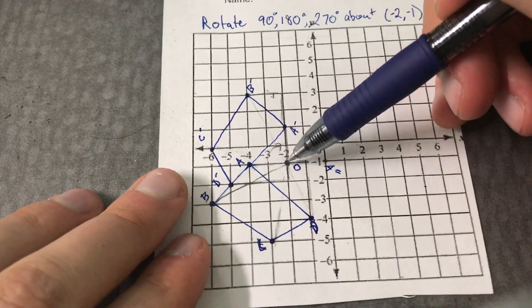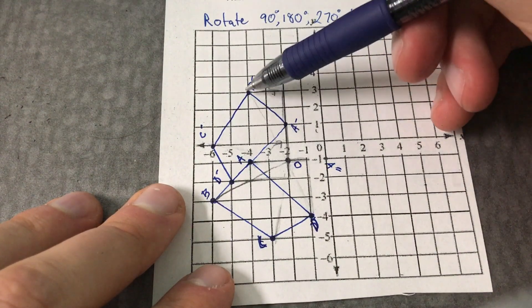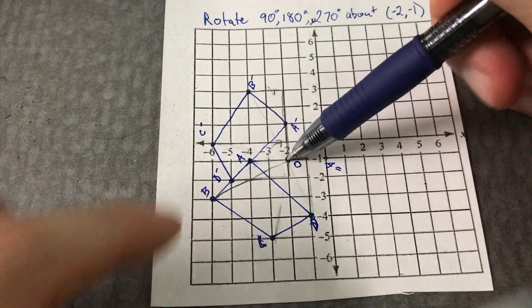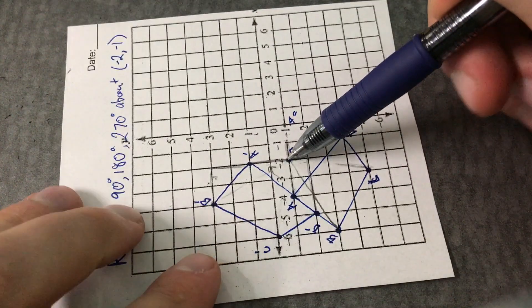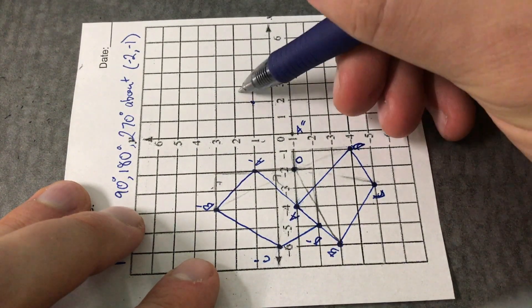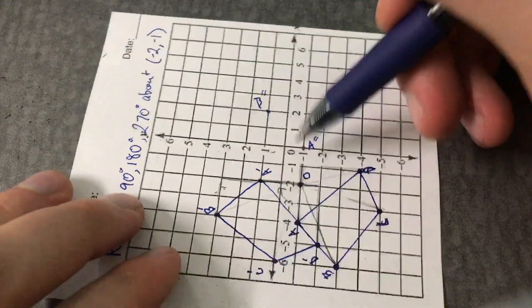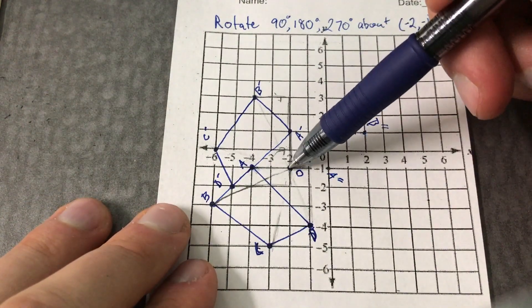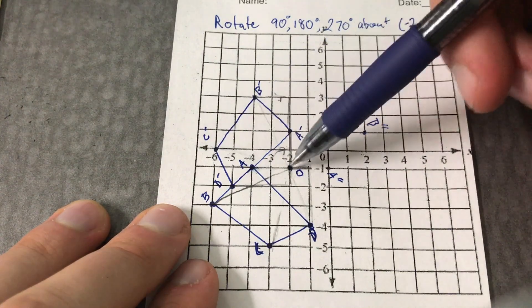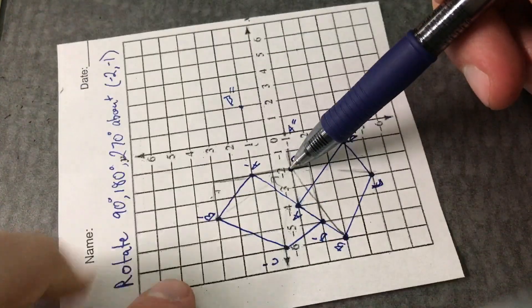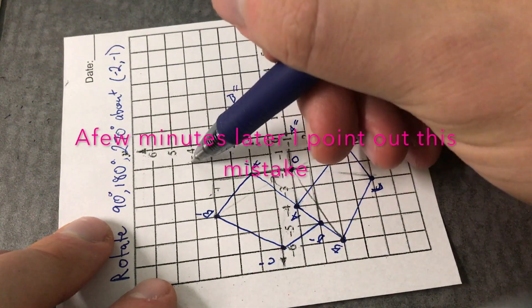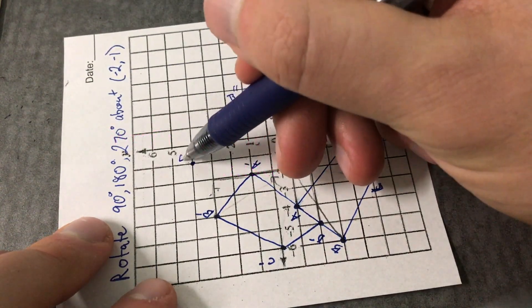If I start at O and I want to create my new B, two units left and up four, rotate, two units left and up four, be right here. So it'll be B double prime. From O to C, one up, one up, five to the left, rotate, one up, one, two, three, four, five to the left. C double prime.